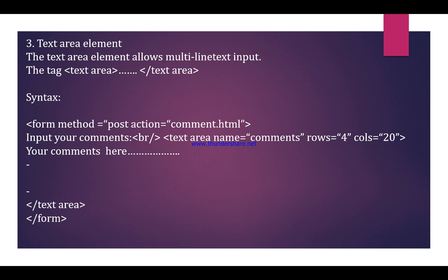Next is the text area element. The text area element allows multiple line text input, using opening and closing tags. It can be used to enter comments, reports, or long descriptions of a product. It specifies the size of the text area element using rows and columns. The row attribute sets the number of rows of text that will be visible without scrolling up or down. The column attribute sets the number of columns of text that will be visible without scrolling left to right.